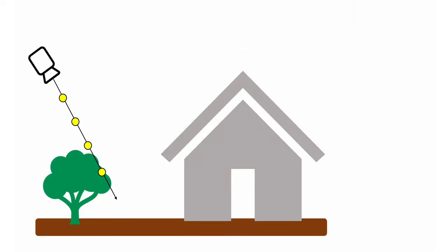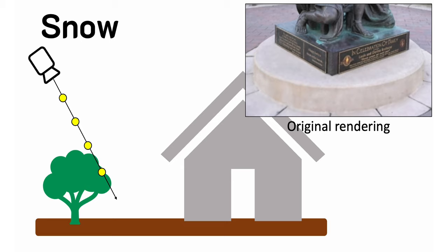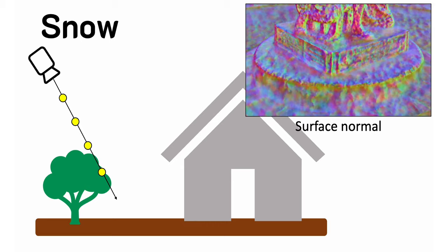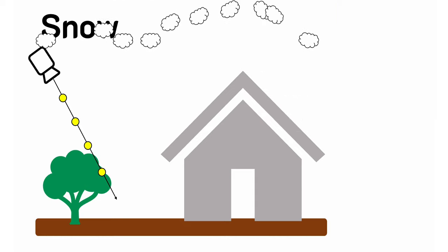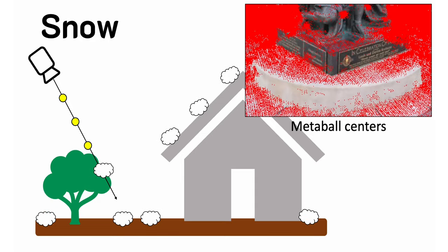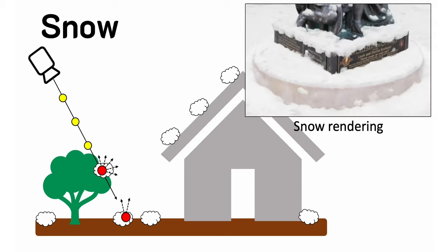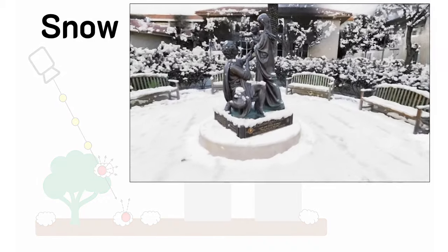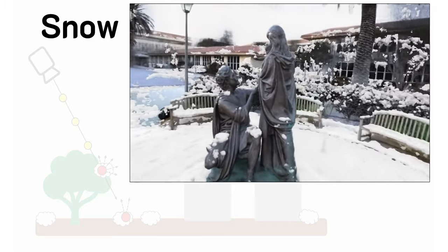Third, rendering snow is a bit more tricky, since we need to know where the snow will accumulate in the scene. Snow is more likely to accumulate on surfaces facing upward, and the deeper part of the snow is denser due to gravity. We simulate the snow particles using metaballs and estimate their density using kernel density estimation methods. We then compute the spatially varying color of the snow with subsurface scattering effects, enabling realistic rendering of snow in a radiance field.